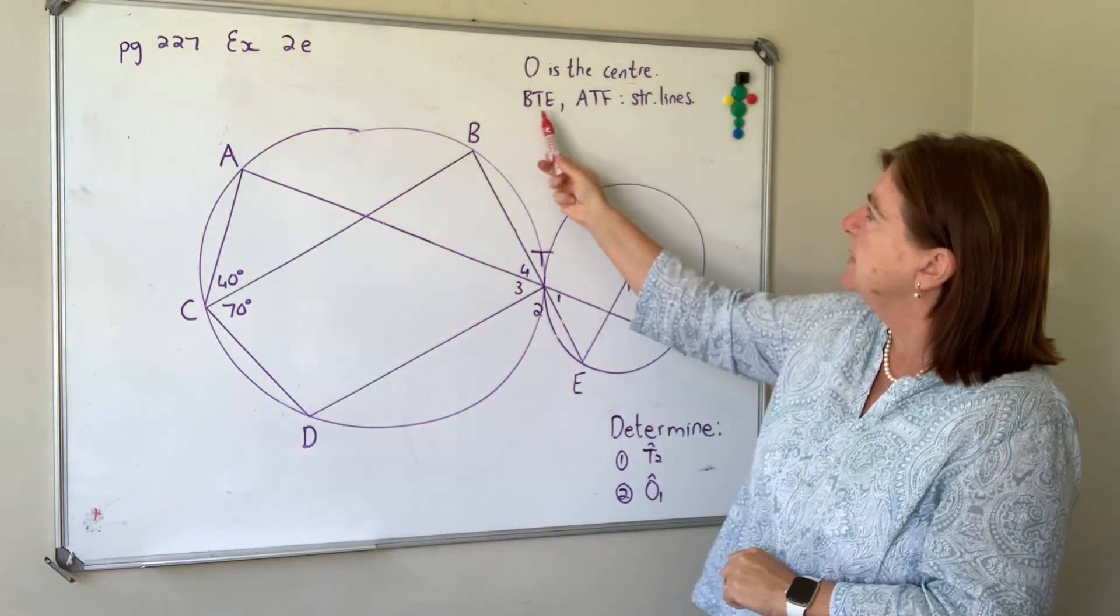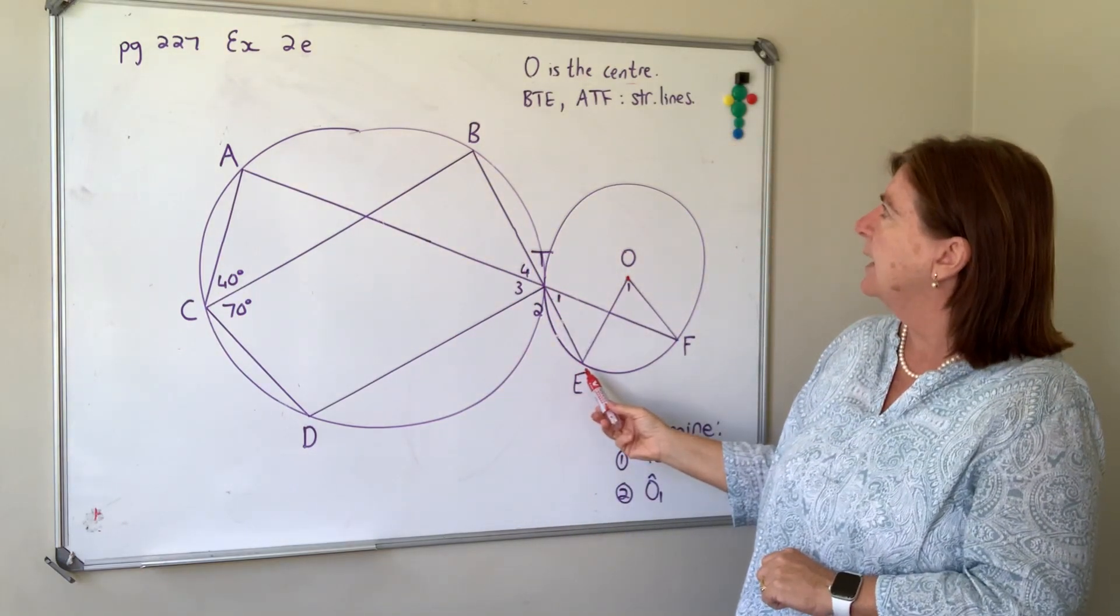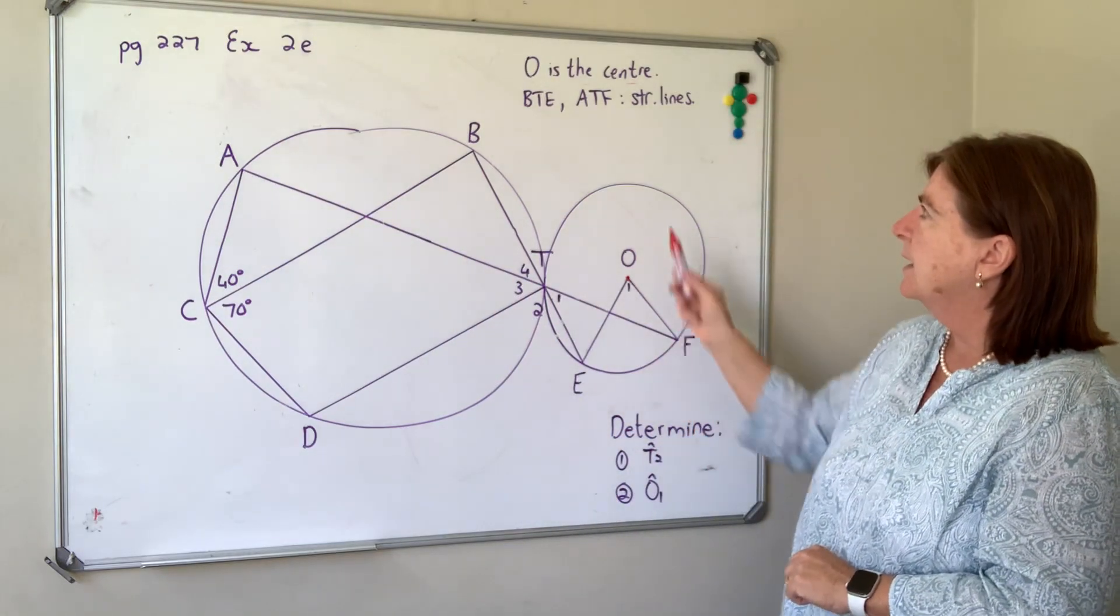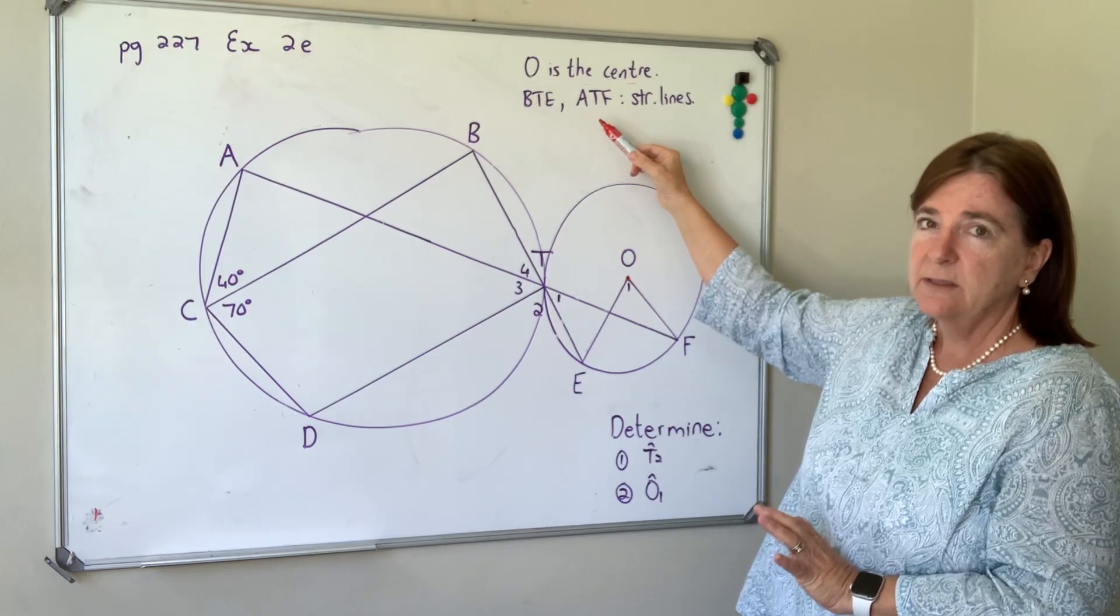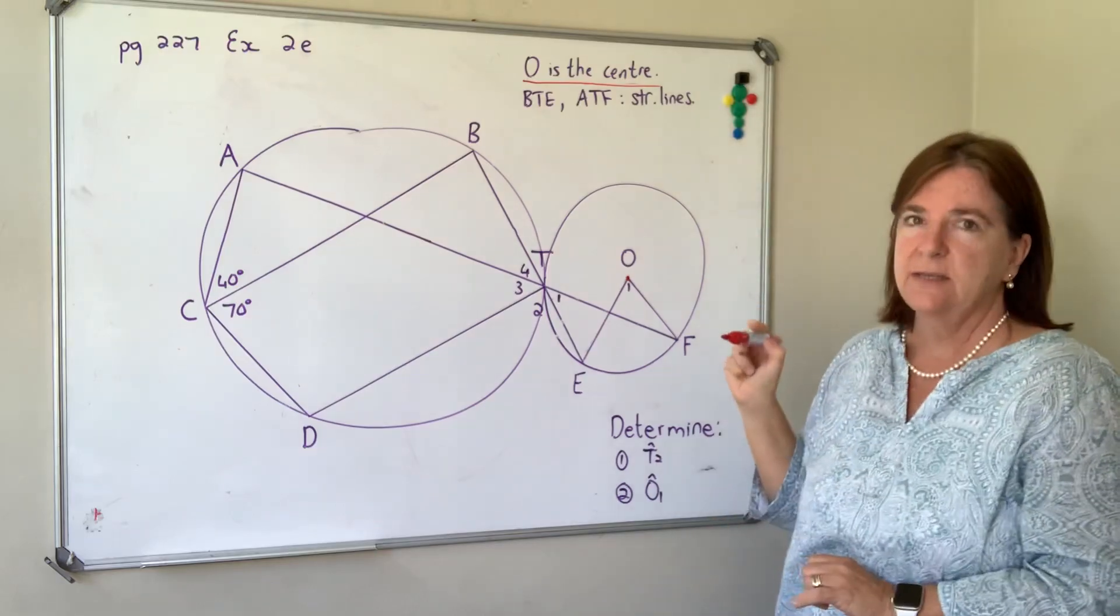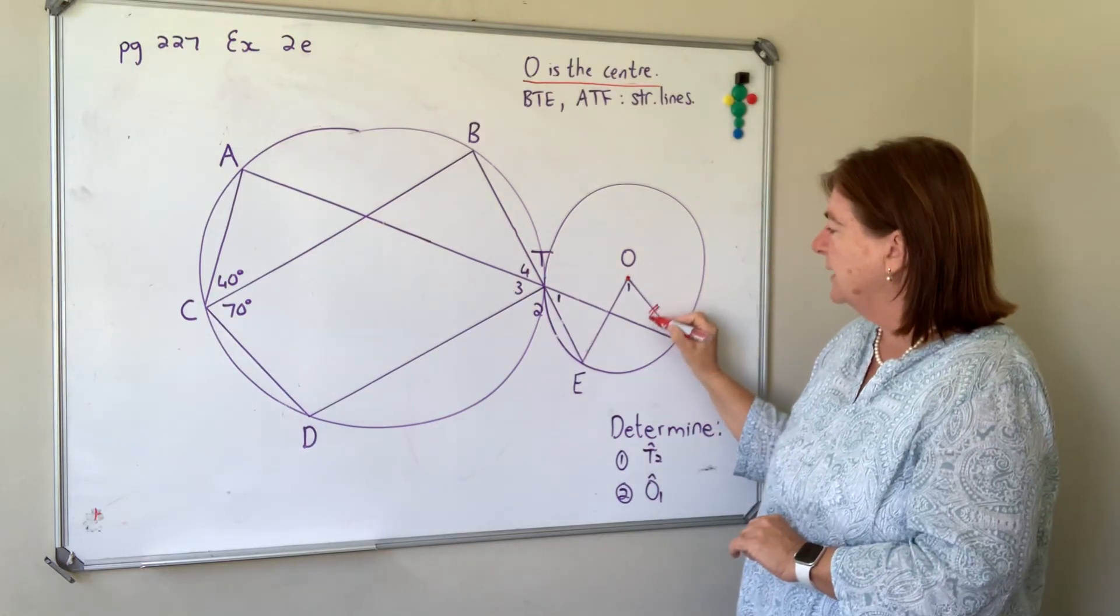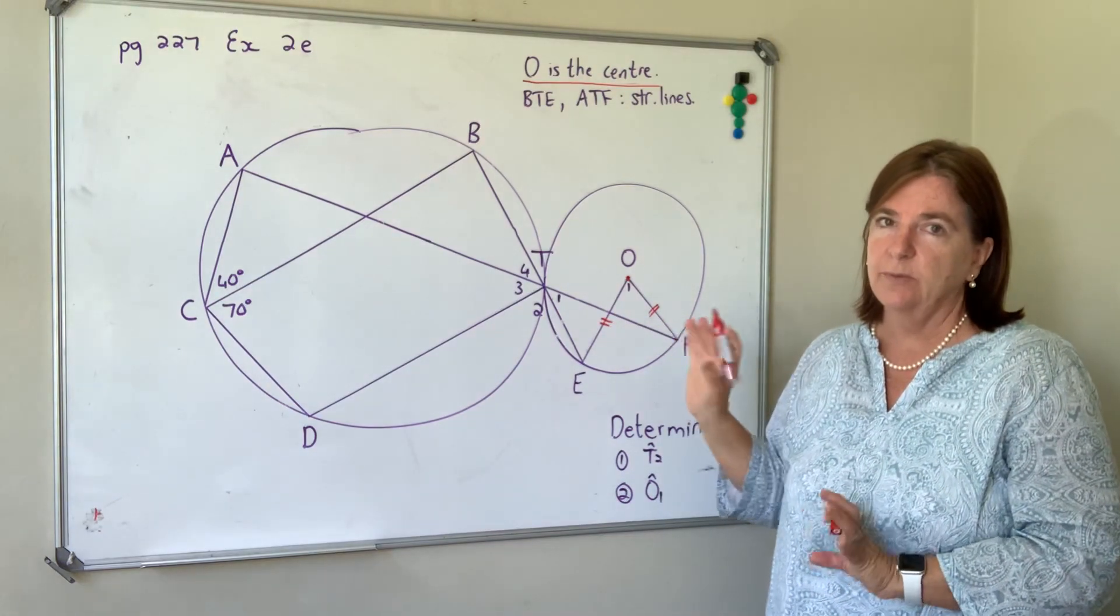They also tell us that BTE is a straight line and ATF is a straight line. Now that essentially doesn't tell us too much, but what tells us a bit more is the fact that we have O is the center, because immediately if we've got a center we've got radii.